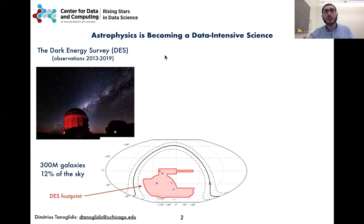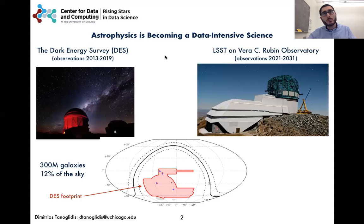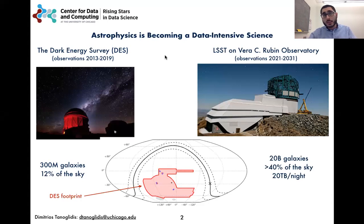You can see its footprint here. In the near future, surveys like Rubin Observatory's LSST will yield even larger data sets. LSST is expected to observe 20 billion galaxies over the next 10 years and produce 20 terabytes of data per night.